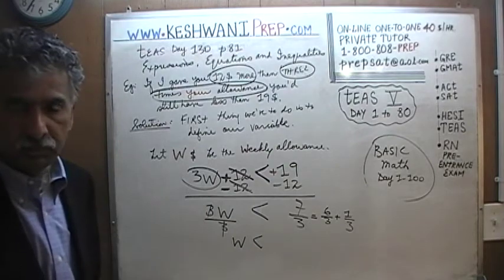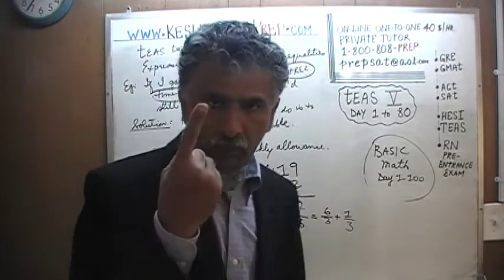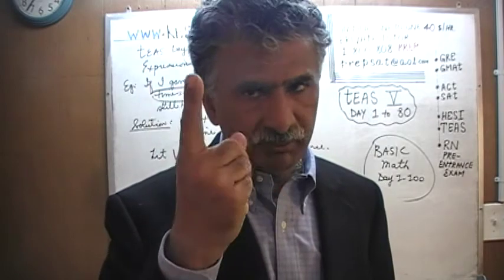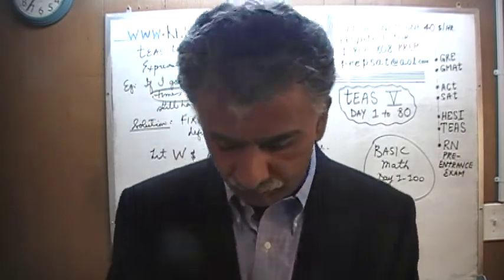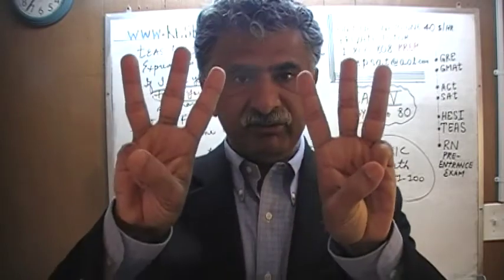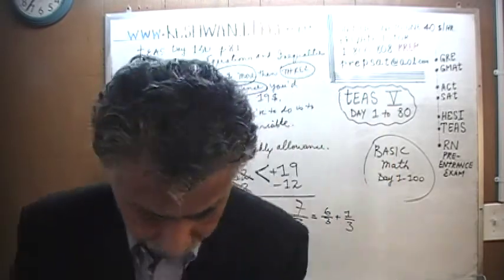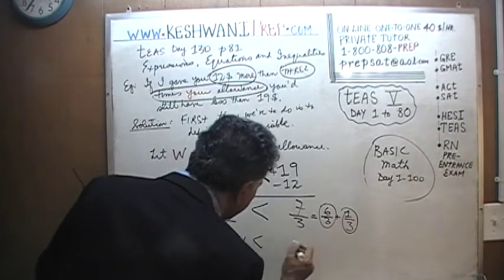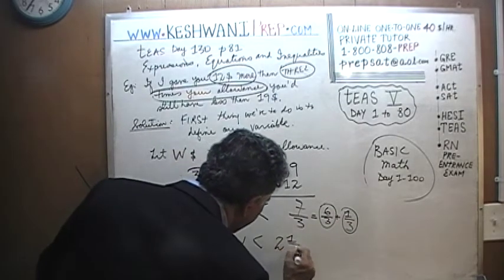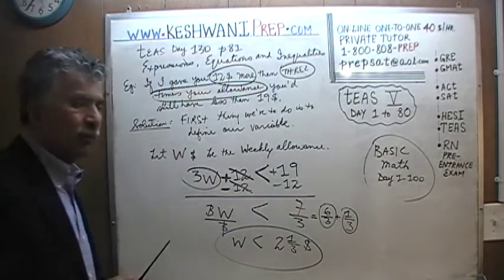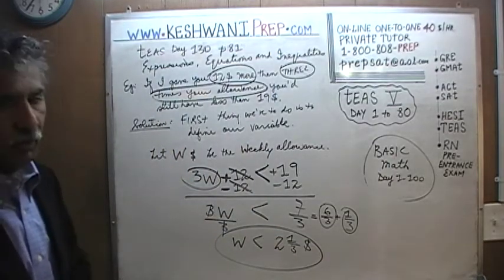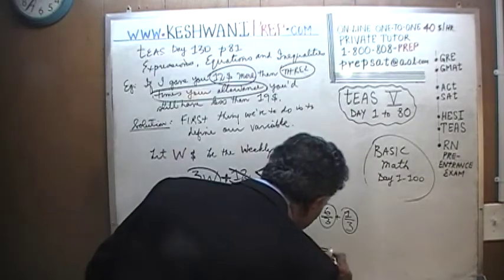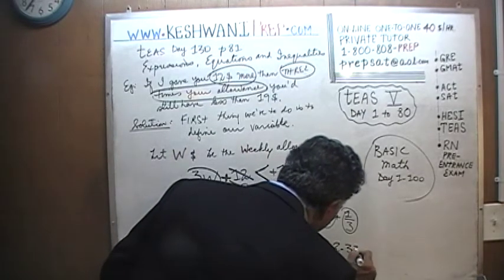6 thirds equals 2, because 3 thirds make 1, and another set of 3 thirds makes 2. So 7 thirds is 2 and 1 third. It turns out that the weekly allowance is less than 2 and 1 third dollars — less than 2 dollars and 33 cents. I still don't know the exact allowance, but whatever it is, it is less than 2 dollars and 33 cents.